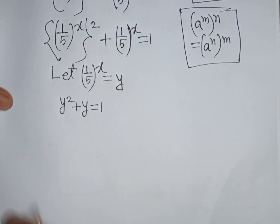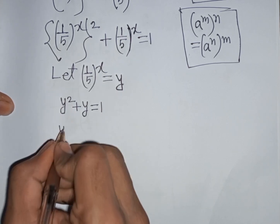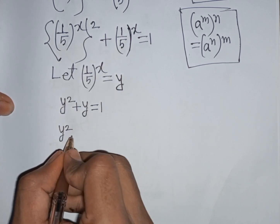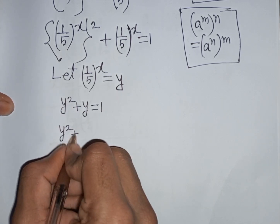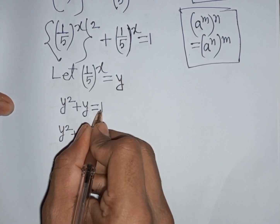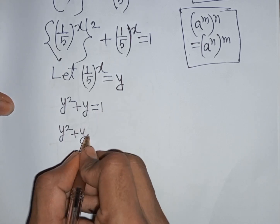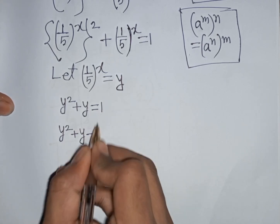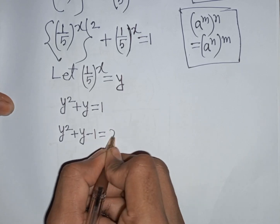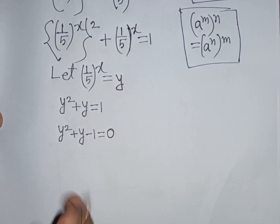Our equation becomes y squared plus y equals 1. Moving the 1 to the left side gives us y squared plus y minus 1 equals 0.